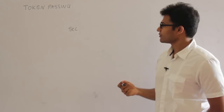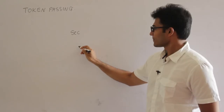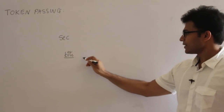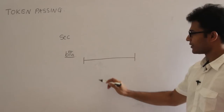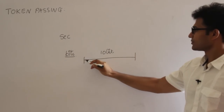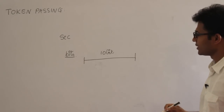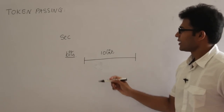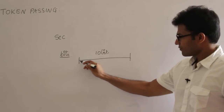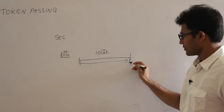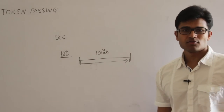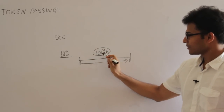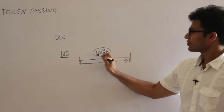Sometimes they will try to measure time in bits. How could time be measured in bits? Sometimes they say the propagation delay in this wire is 10 bit times. What that means is: by the time one bit reaches from one end of the wire to the other end, I could transmit 10 bits. That is the meaning of a propagation delay of 10 bits.